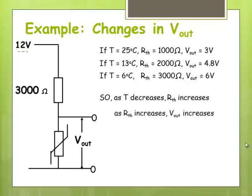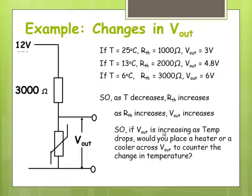So let's look at that. So as R thermistor increases, V out increases. So if V out is increasing as temperature drops, the question is would you replace the heater or the cooler across here to counter the change in temperature? Remember when V out is increasing, that means we're getting to a voltage that's going to switch on some other circuit that's attached across it. So voltage needs to be increasing here to switch it on. So as temperature keeps dropping, the voltage across this keeps increasing, which means that eventually this would switch on.